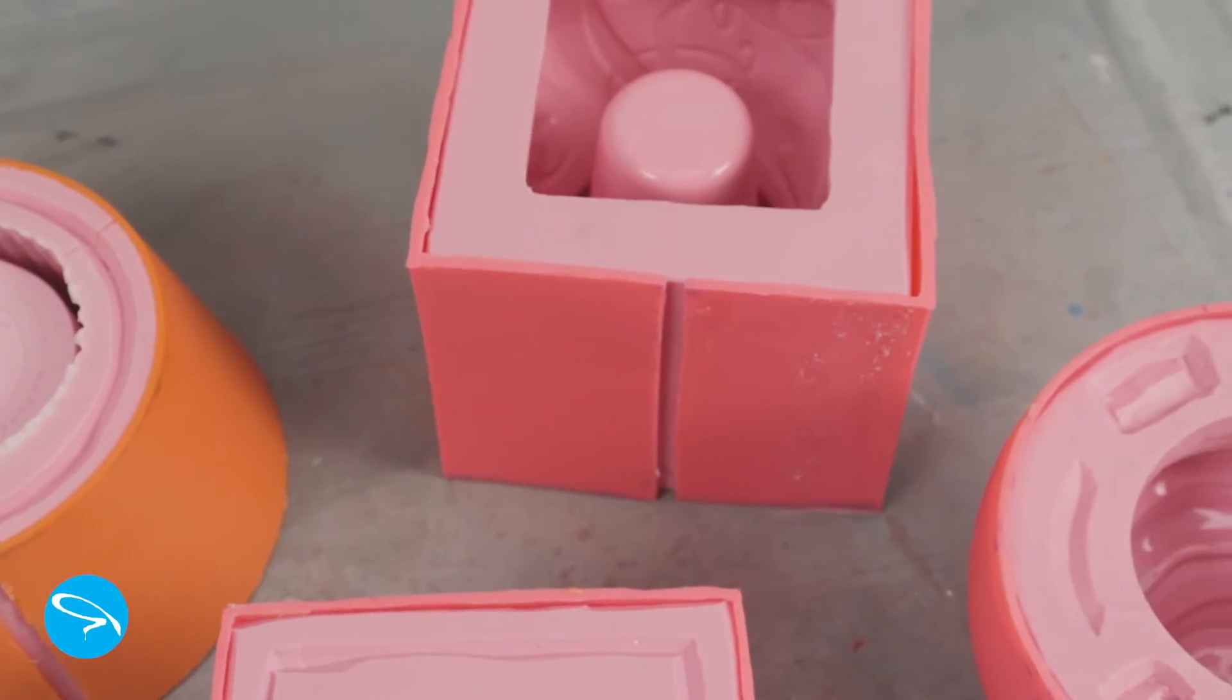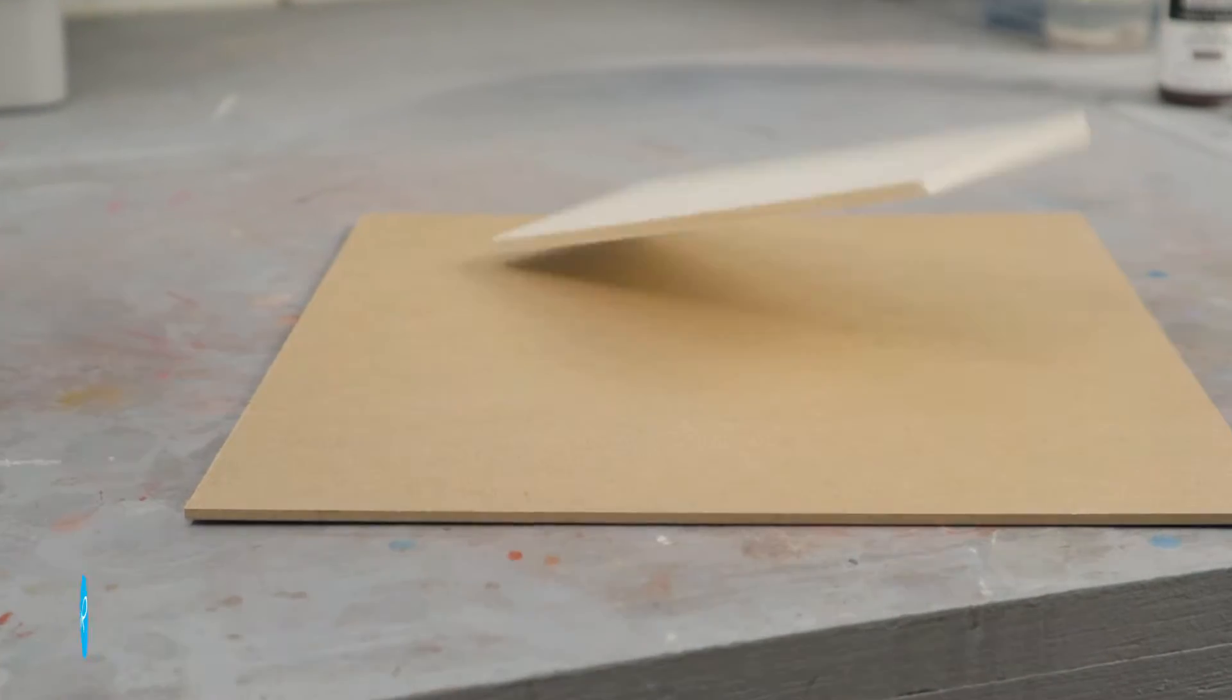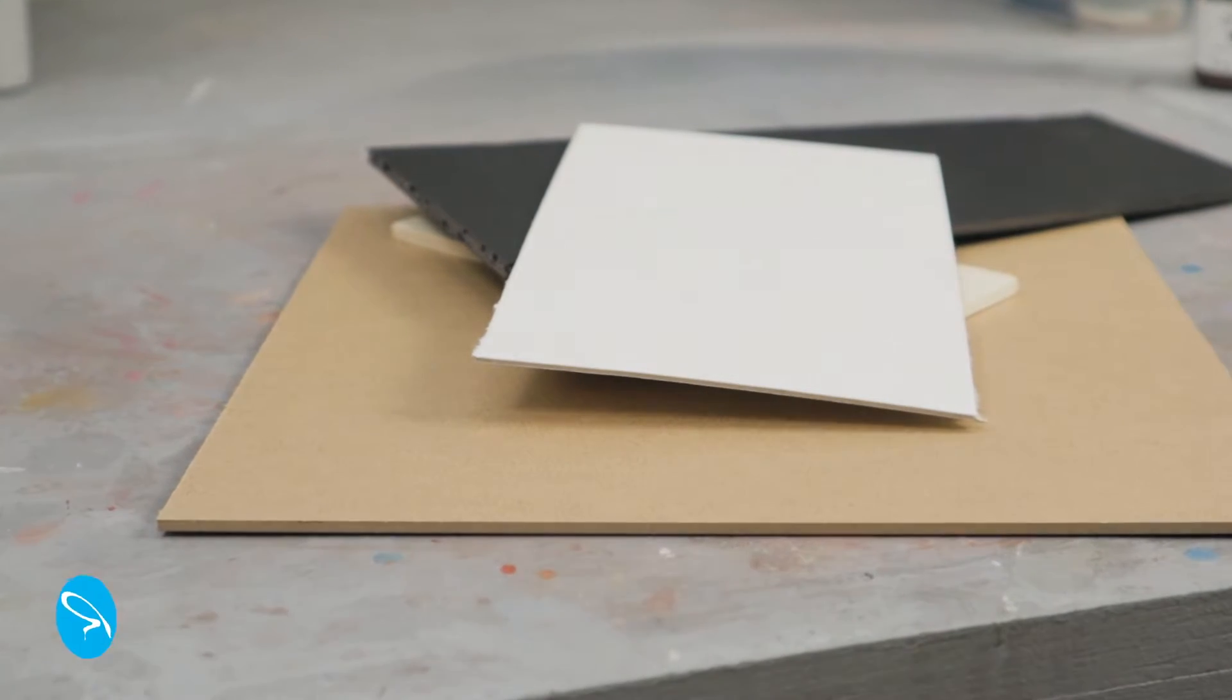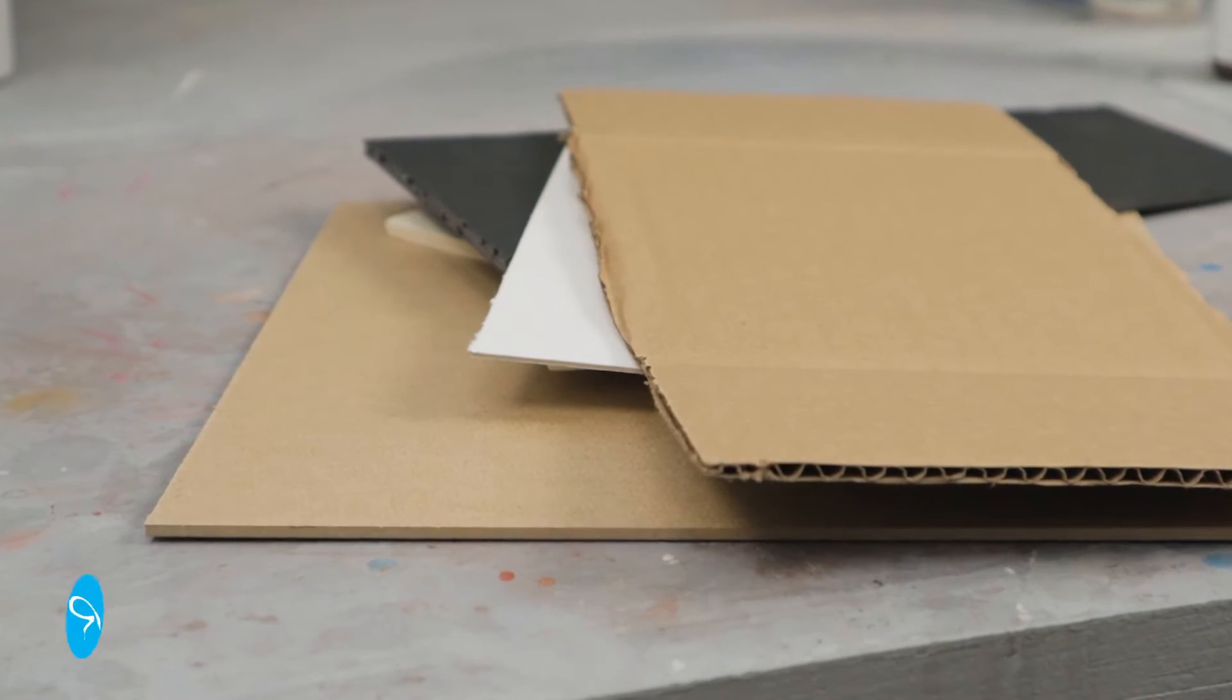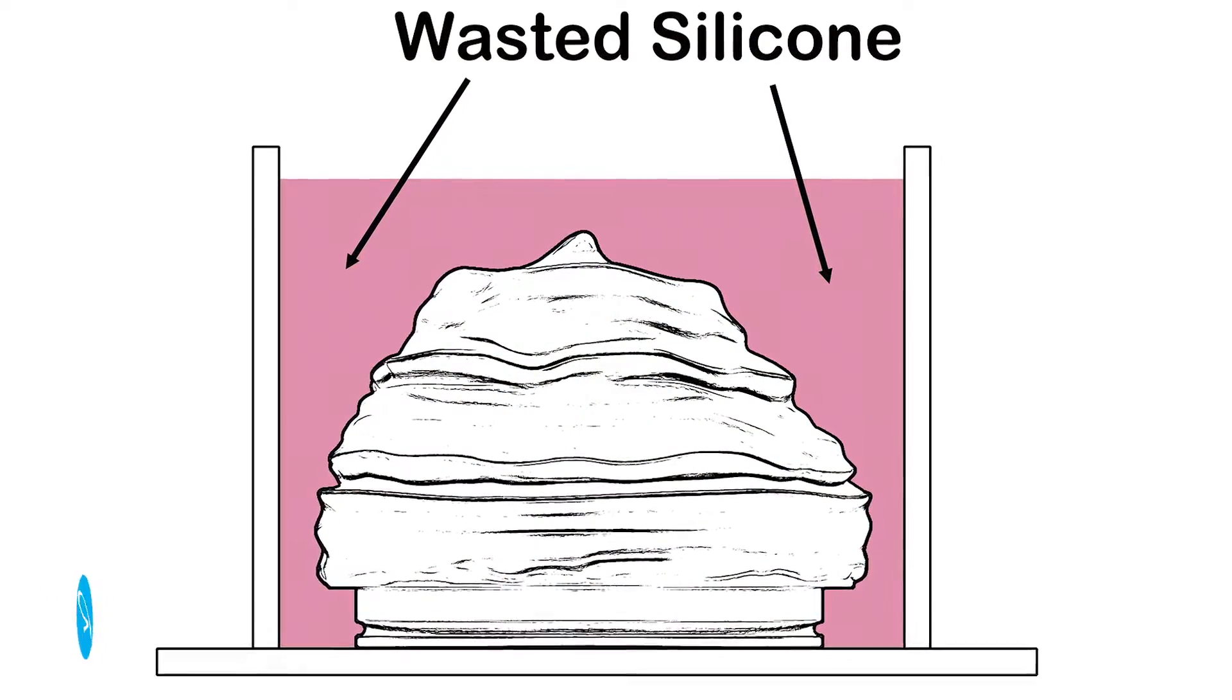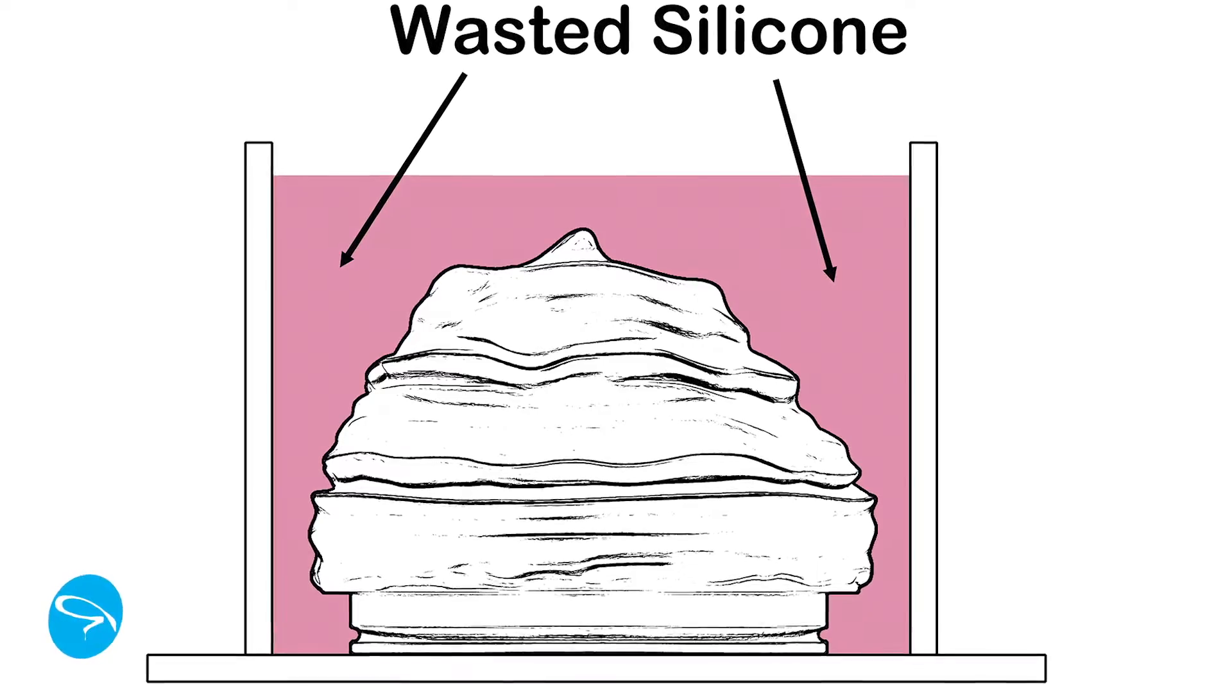Traditionally, people build mold cases out of melamine, plywood, MDF, acrylic sheet, foam core, cardboard, or anything else they've got lying around. The problem with that is, if you have an irregularly shaped object, you're potentially wasting a lot of silicone, and that stuff is expensive.